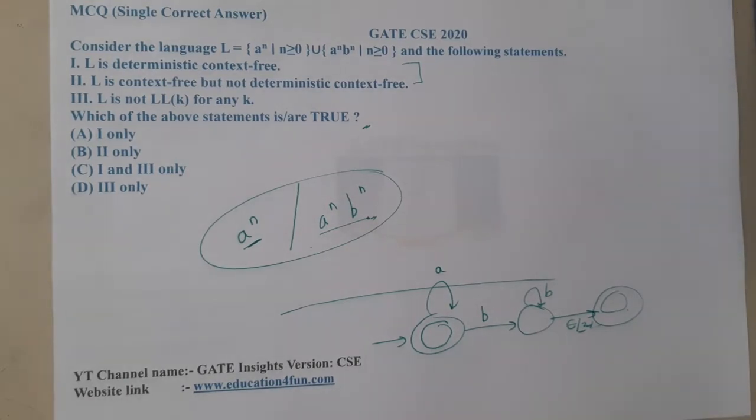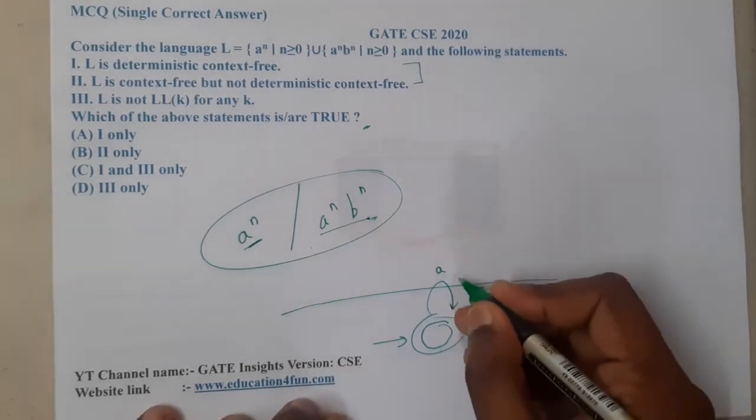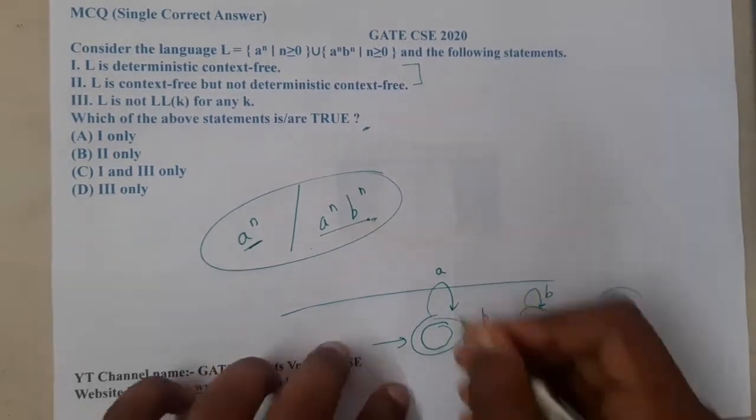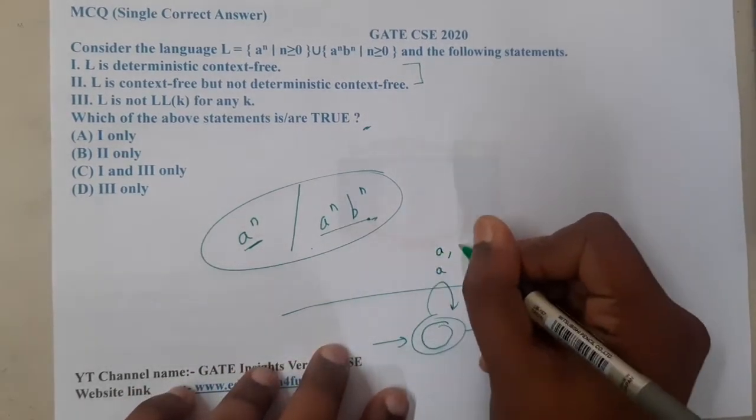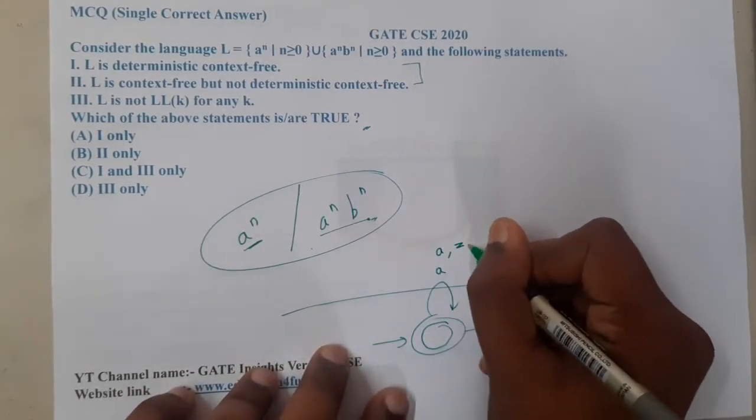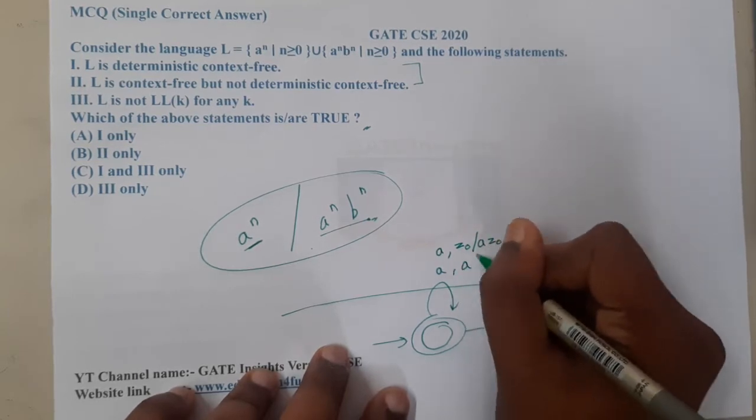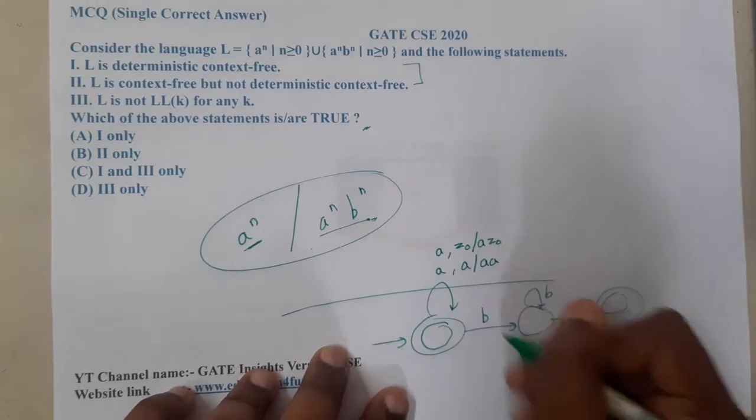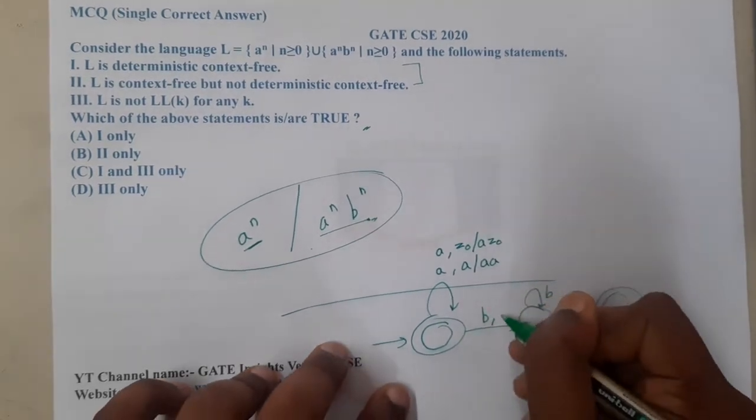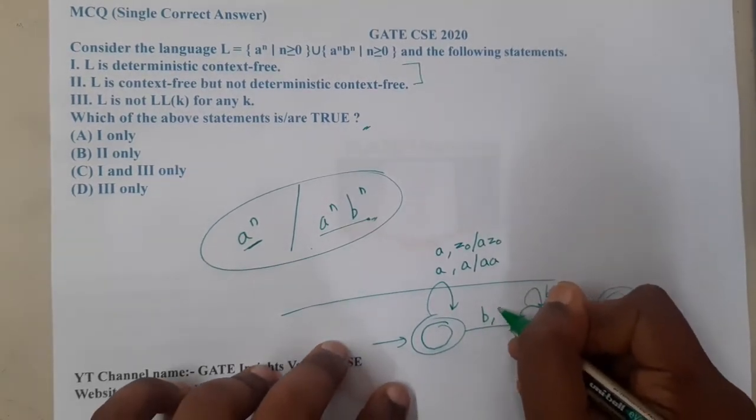I did not write the exact expressions like if first 'a' comes. If first 'a' comes and if my top is Z0, I will push it and it will become aZ0. If my input is 'a', it will become aa. If I get 'b', I am going to pop my element.